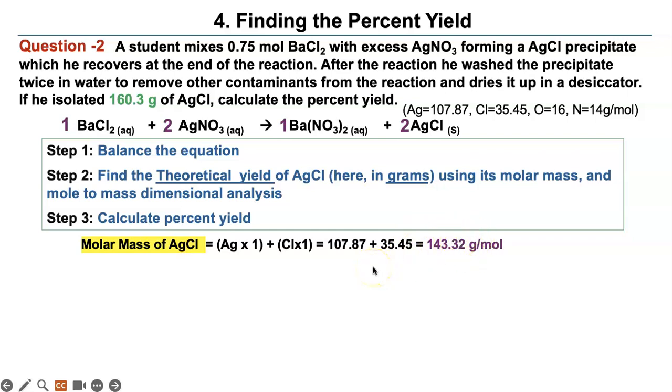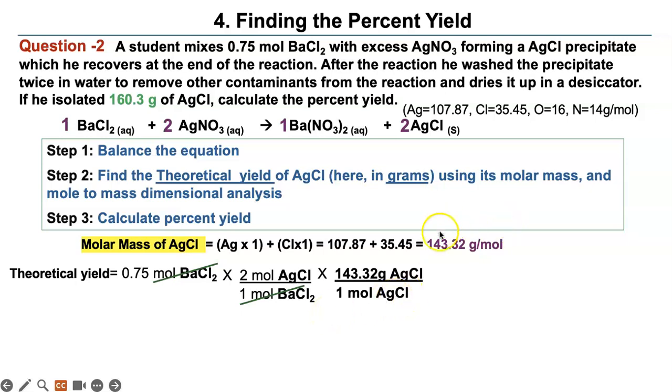Now I am going to find the theoretical yield from this amount of barium chloride, which is the limiting reactant, because we have excess silver nitrate. That means silver nitrate, this guy is excess, this is the limiting reagent. So I'm going to find out how much silver chloride is made with that. So I put the mole ratio of this guy and this guy over here. Now we have to cancel out moles of silver chloride. So you're going to put this one as a factor. One mole is equal to 143.32 grams silver chloride.